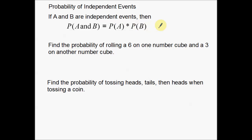The first thing we've got to talk about is what we mean by independent. Independent events are events that have no bearing on one another. These examples we have don't really have any bearing on one another. For instance, find the probability of rolling a six on one number cube and a three on another — that's a perfect example of two events that have nothing to do with one another. Rolling a six on one and a three on a different cube — it's a totally different cube. That's what we mean by independent events.